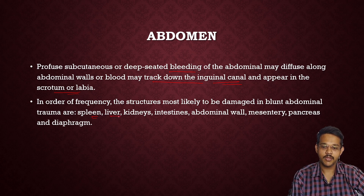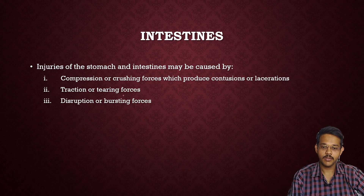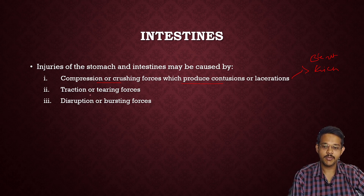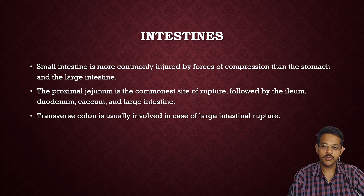Injury to the stomach and intestine may be caused by compression or crushing force, which produces contusion and lacerations, mainly by blunt injuries like fists, kicks, or blunt weapons like a hammer. There may also be traction or tearing forces, or disruption or bursting forces. The small intestine is more commonly injured by compression forces than the stomach and large intestine, since the small intestine has a larger surface area.